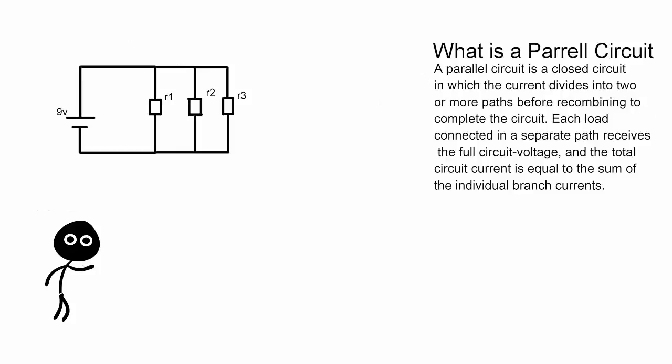What is a parallel circuit? A parallel circuit is a closed circuit in which the current divides into two or more paths before recombining to complete the circuit. Each load connected in a separate path receives the full circuit voltage.